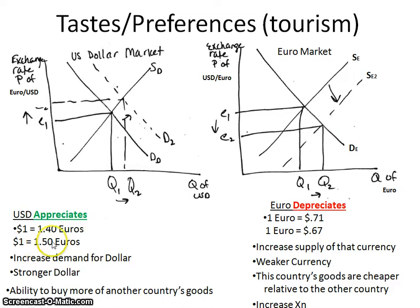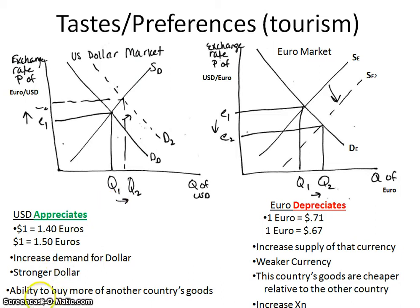The dollar appreciates because of the increase in demand for it. Another way of saying the dollar appreciates is to say we have a stronger dollar. Basically, this means we now have the ability to buy more of another country's goods. If I had a dollar I could only buy 1.4 worth of goods, but now I can buy 1.5 — so technically I can buy more of something.